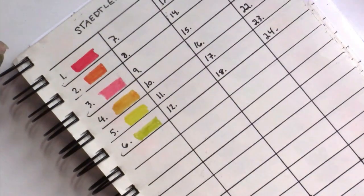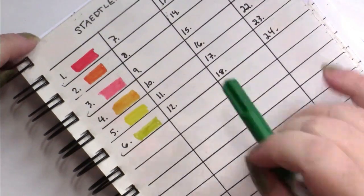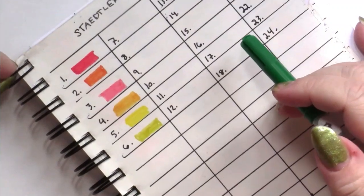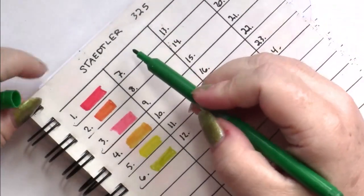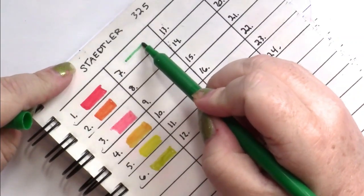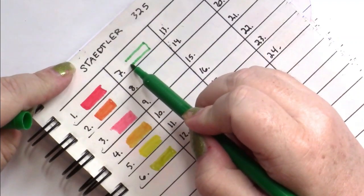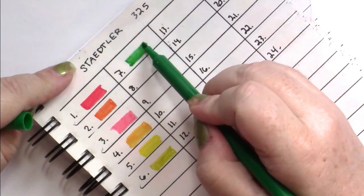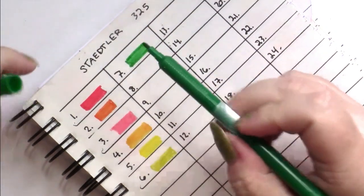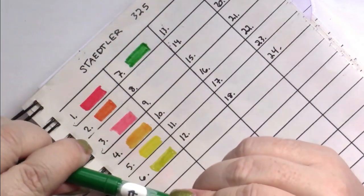Okay then we move onto greens. And most marker sets are high on the greens and the blues. And this set is no different. So here we have what I expected to be a nice bright green. And it is.